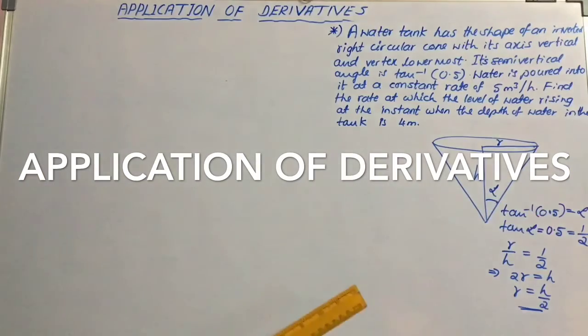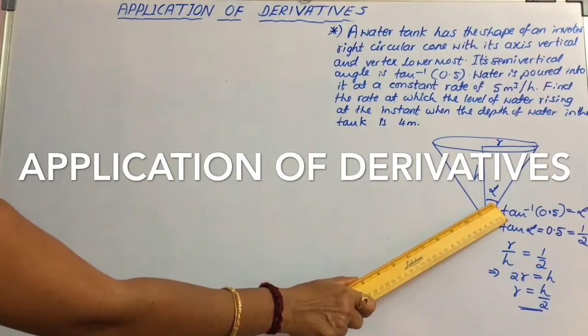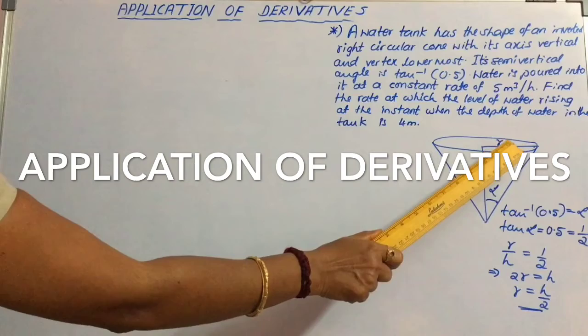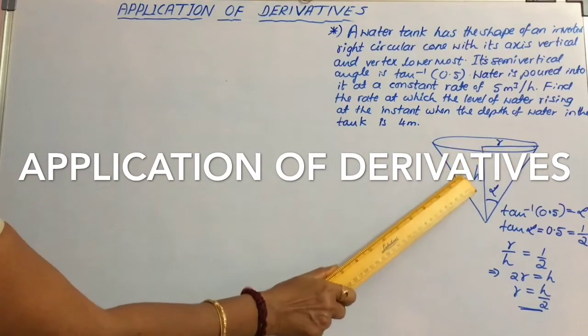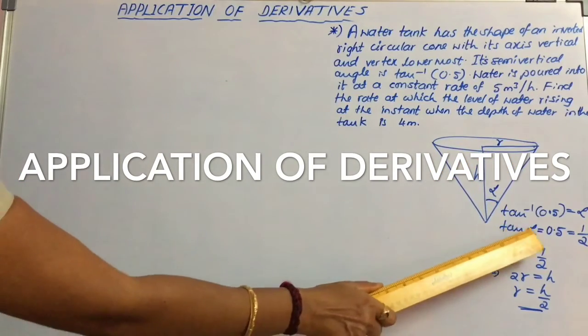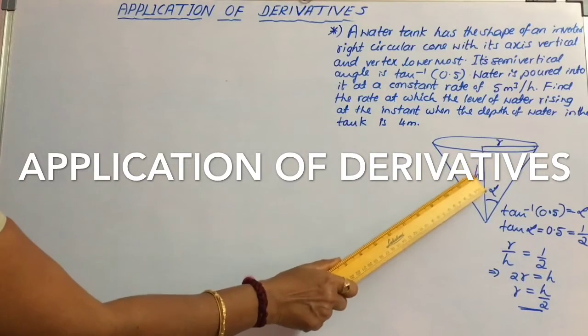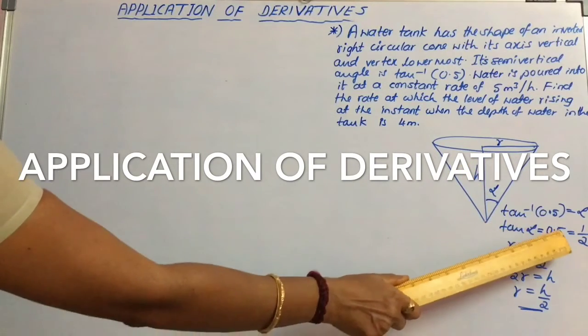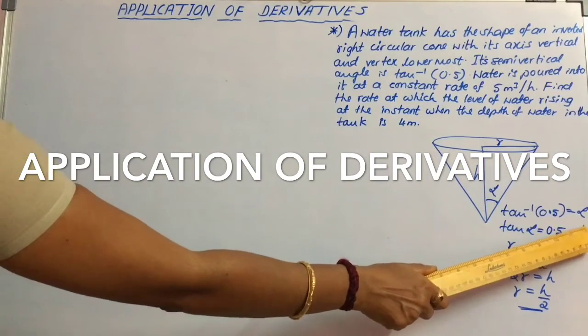Let it be equal to alpha. From the definition of tan alpha, we know that it is equal to opposite by adjacent. So tan alpha equals r by h, that is equal to 0.5, equal to 1 by 2.